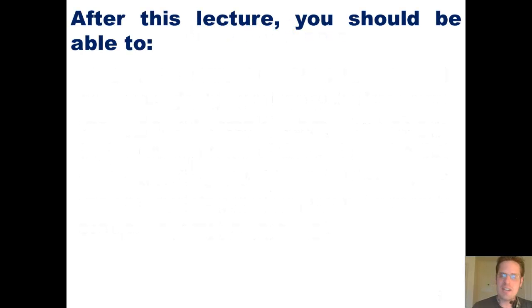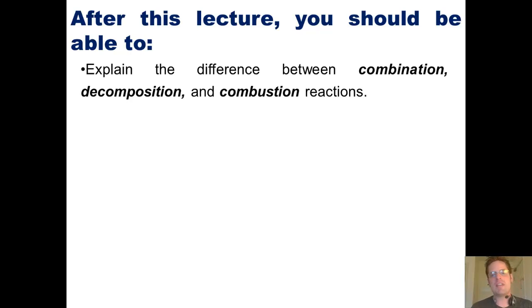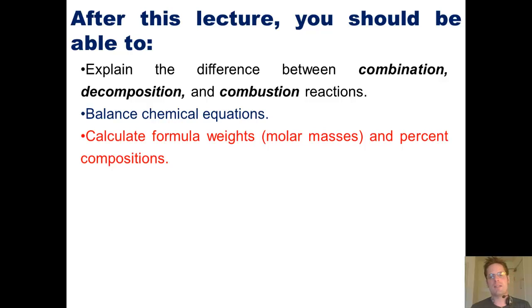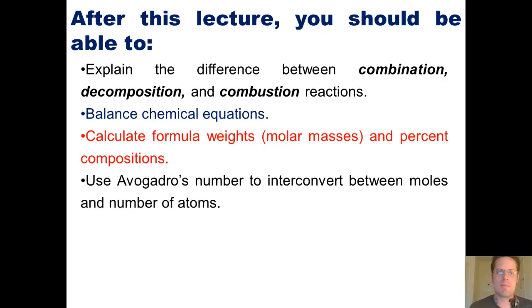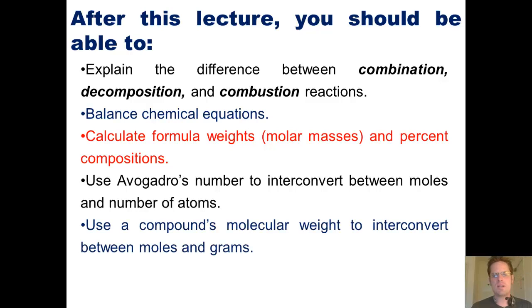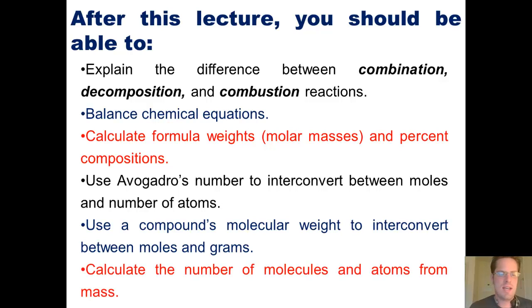After this lecture, you guys should be able to do each of the many following tasks. One, explain the difference between combination decomposition and combustion reactions. Two, balance chemical equations. Three, calculate formula weights, which are also called molar masses, and percent compositions. Four, use Avogadro's number to interconvert between moles and number of atoms. Five, use a compound's molecular weight to interconvert between moles and grams. And six, calculate the number of molecules and atoms in a sample from its mass.